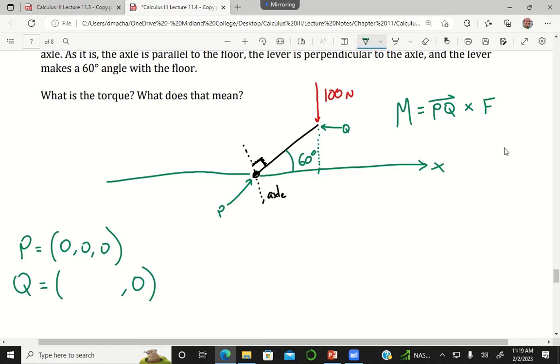The length of the handle times cosine of 60, yeah times cosine of 60. Perfect, so that would be one meter times cosine of 60. What is cosine of 60?